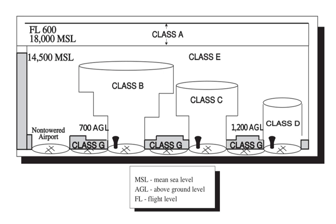Class C airspace is generally airspace from the surface to 4,000 feet above the airport elevation charted in MSL surrounding those airports that have an operational control tower, are serviced by a radar approach control, and have a certain number of IFR operations or passenger emplanements. Although the configuration of each Class C area is individually tailored, the airspace usually consists of a surface area with a 5 nm radius, an outer circle with a 10 nm radius that extends from 1,200 feet to 4,000 feet above the airport elevation, and an outer area. Each aircraft must establish two-way radio communications with the ATC facility providing air traffic services prior to entering the airspace and thereafter maintain those communications while within the airspace.